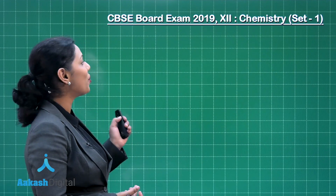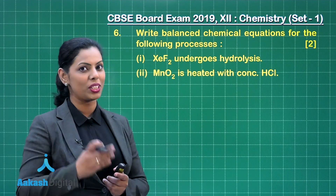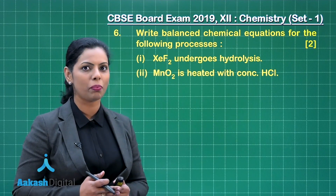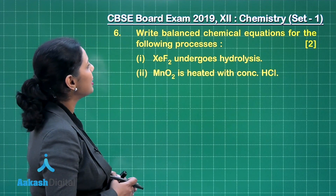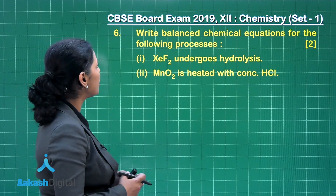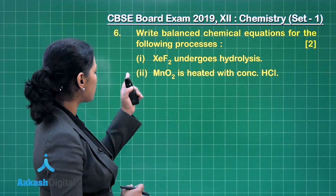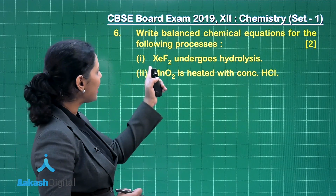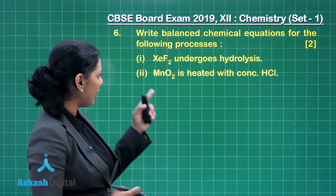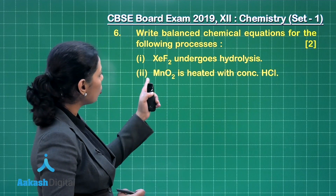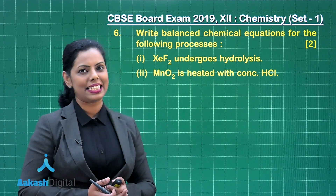Students, it is a turn for question number 6, that is the first question of Section B and it is a 2-marker question. Write balanced chemical equations for the following processes. The first process is XeF2 undergoes hydrolysis, and then MnO2 is heated with concentrated HCl.